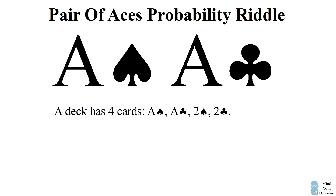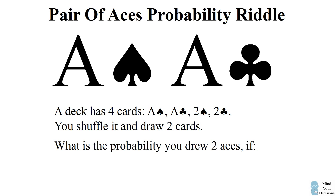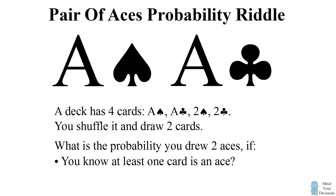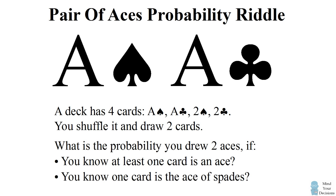We'll simplify things so that you have a deck with only four cards: the ace of spades, the ace of clubs, the two of spades, and the two of clubs. You shuffle this deck and draw two cards. What is the probability the two cards you drew are aces under two different circumstances? Circumstance one: you know at least one card is an ace. Circumstance two: you know one card is the ace of spades. Give this problem a try, and when you're ready, keep watching the video for the solution.